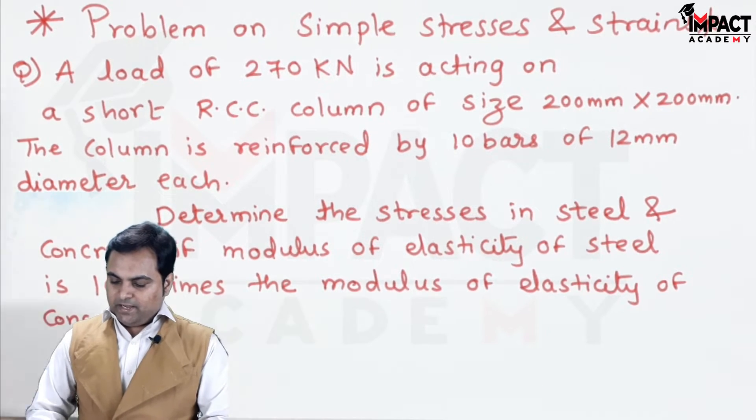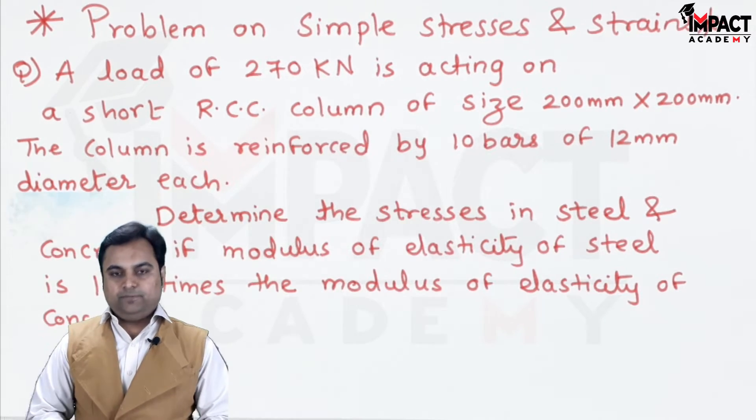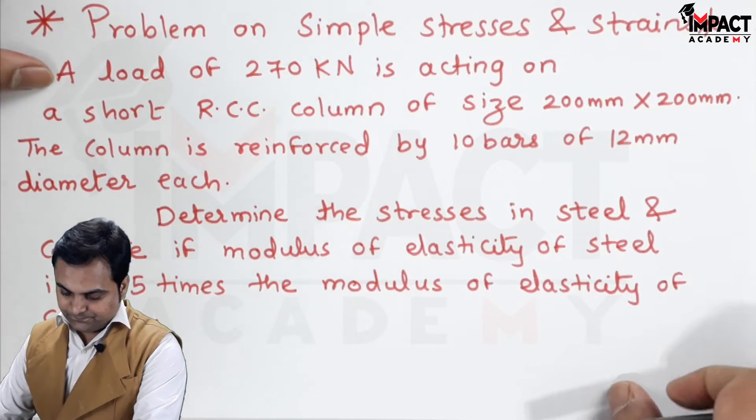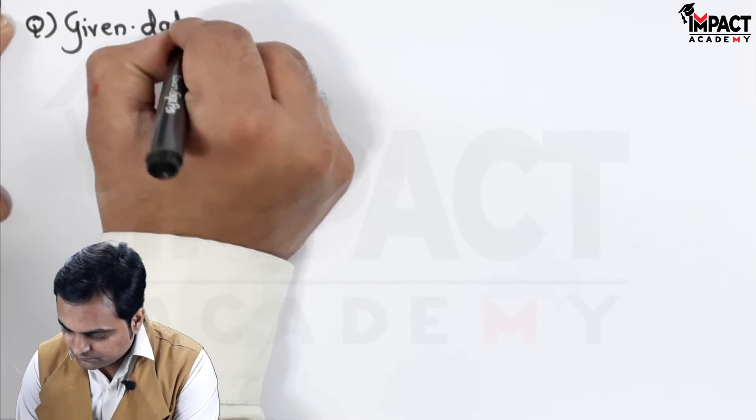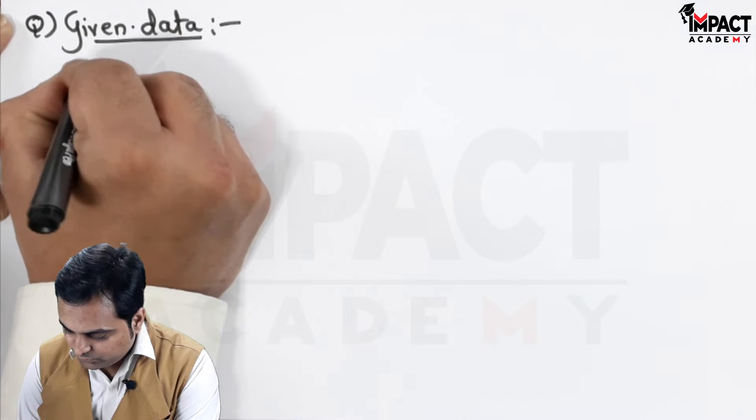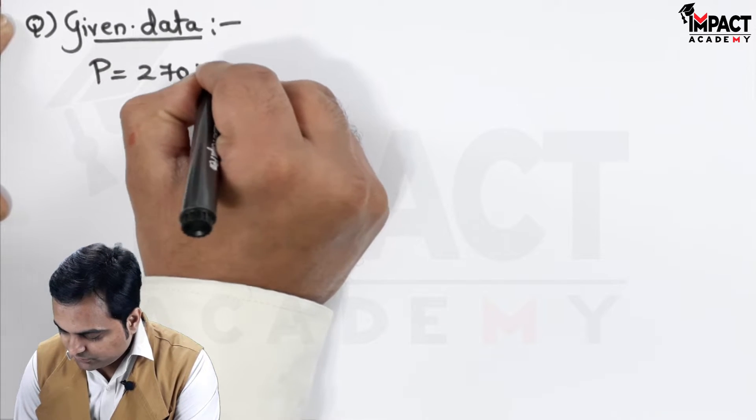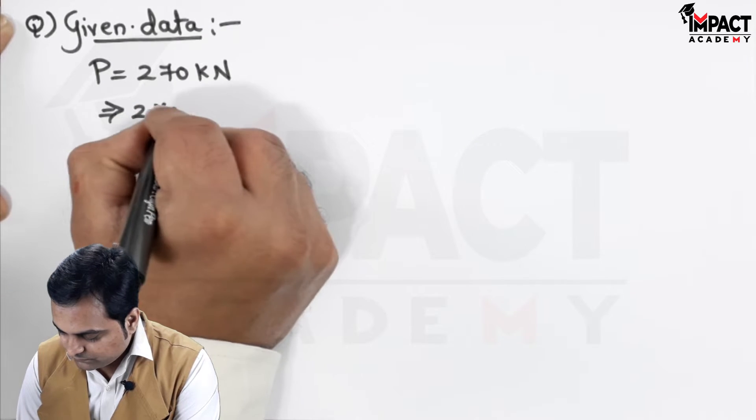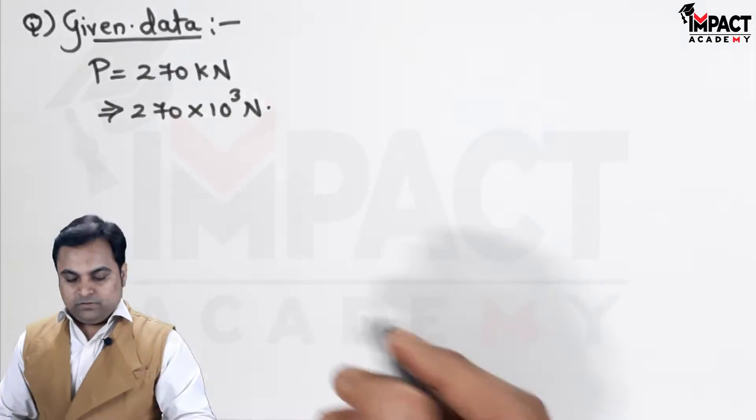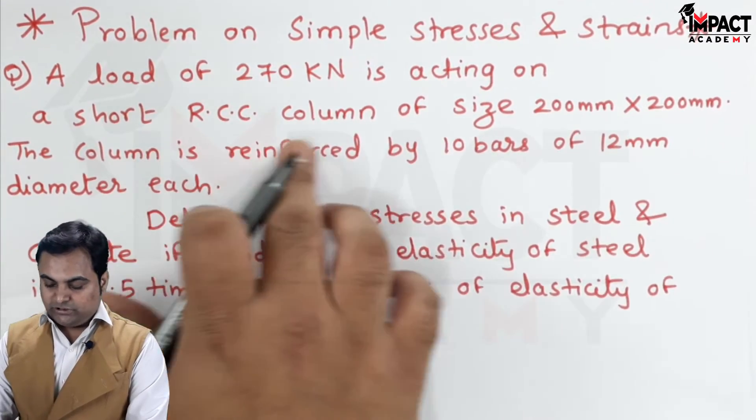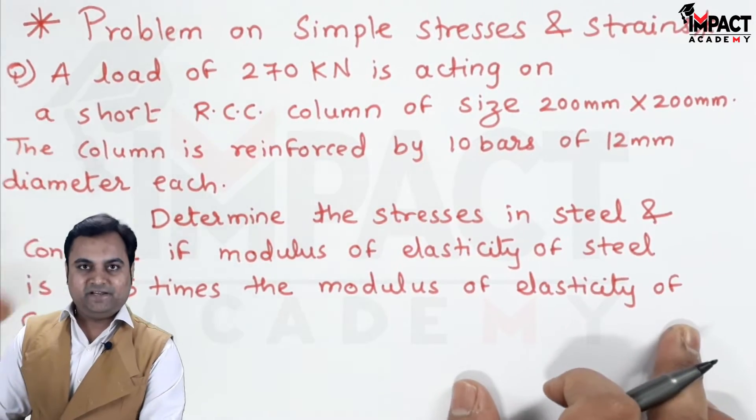Here we have a question. A load of 270 kilonewton is acting on a short RCC column. I will write the data. Load denoted by capital P, 270 kilonewton, which is 270 into 10 raise to 3 newton. It is acting on a short RCC column of size 200 by 200. This I will explain by drawing the diagram.